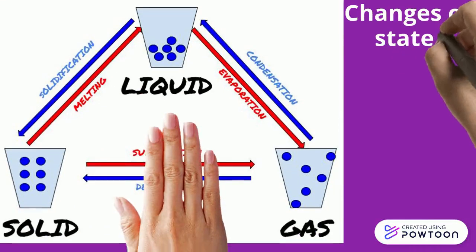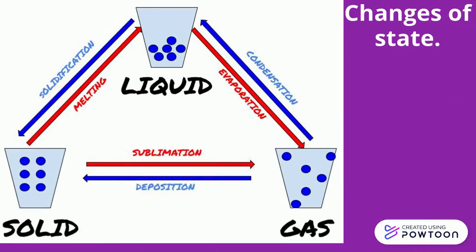Changes of state. Here is a picture explaining the different changes of state. For example, we can go from solid to liquid by applying heat, and it is called melting. The opposite, applying cold, is called solidification. We can go from gas to liquid, which is called condensation, by applying cold. And evaporation is the opposite — going from liquid to gas — if we apply heat.